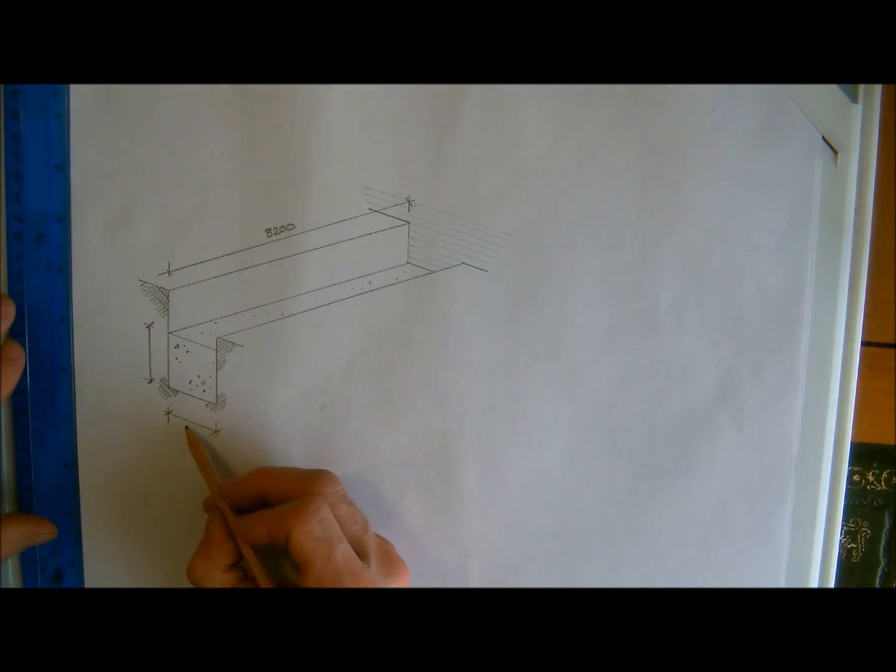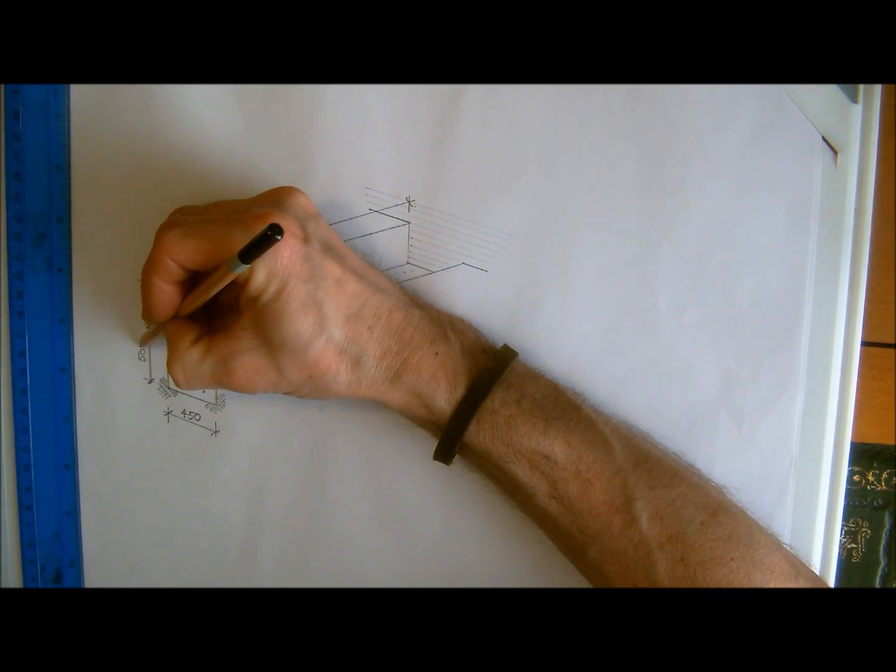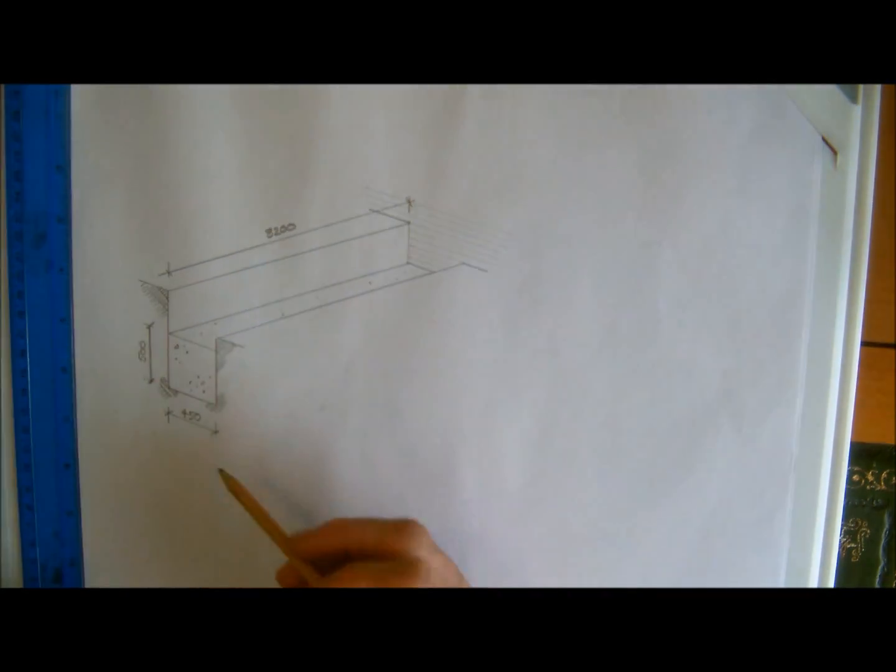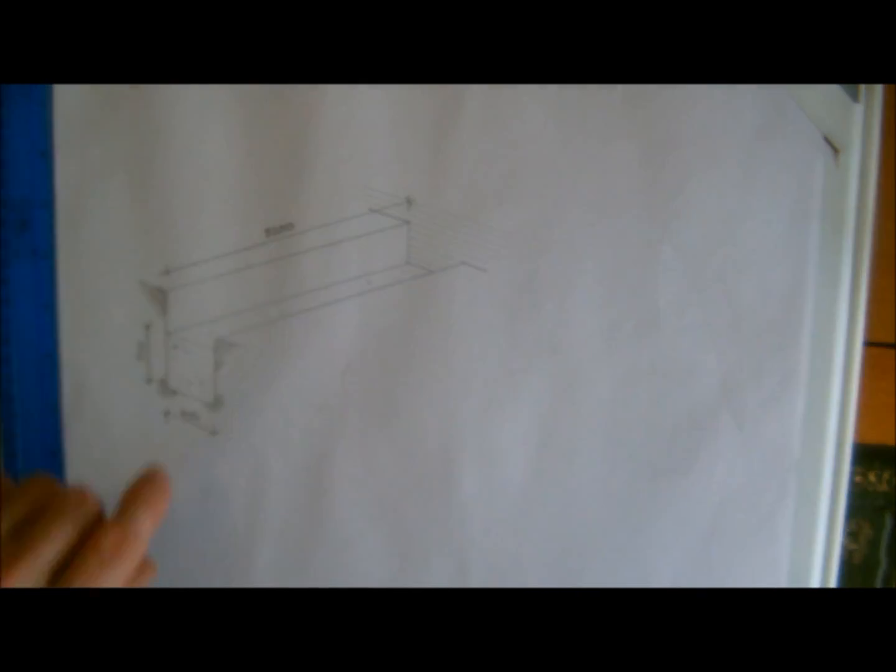And the width of the wall I'm going to say is going to be four hundred and fifty millimeters and the depth of the foundation I'm going to say is five hundred. So these are the three dimensions that we need to calculate the amount of concrete needed for this trench.